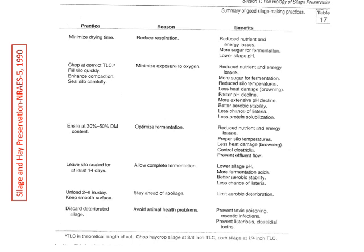We talk about harvesting right — that means maturity and length of cut. We want to fill the silo quickly, pack tightly, and cover quickly to get the oxygen out as fast as we can. All of those procedures, if done right, will minimize exposure to oxygen and minimize the aerobic phase. We want to get into the fermentation phase as quickly as we can.